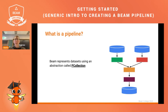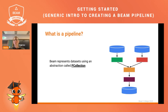The data itself in a Beam pipeline is represented as PCollections, which are collections of data elements that can be either bounded or unbounded. Bounded PCollections have a finite size — for instance, when we want to process a file we know how big the file is. With unbounded sources we have an infinite size because we don't know how many messages are coming in the future.